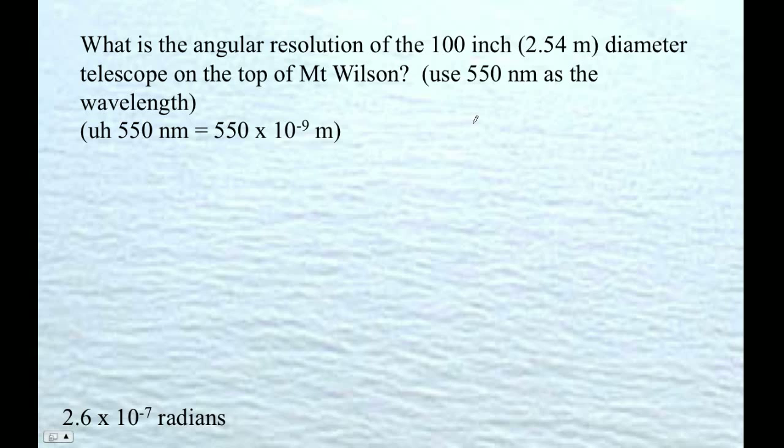What is the angular resolution of the Mount Wilson 100-inch telescope, handily converted to us 2.54 meters? So it was 550 nanometers as the wavelength.